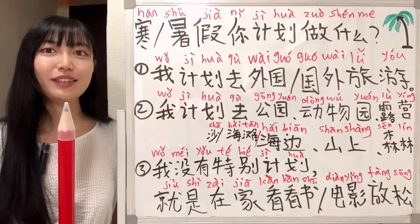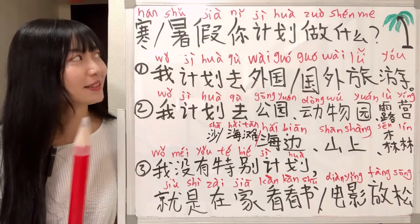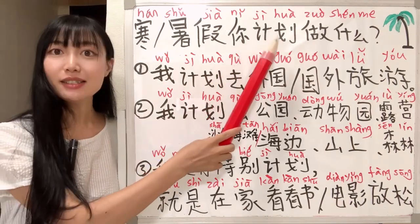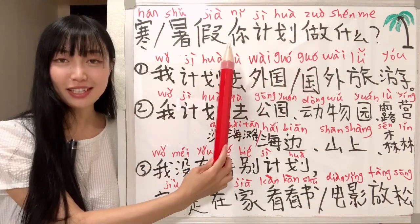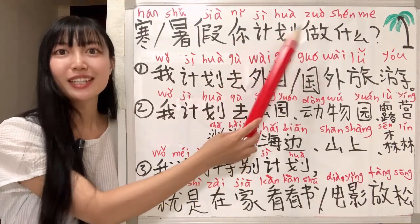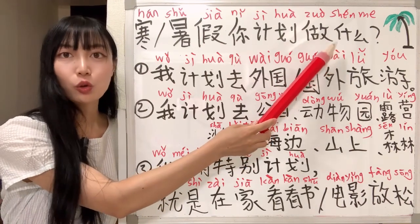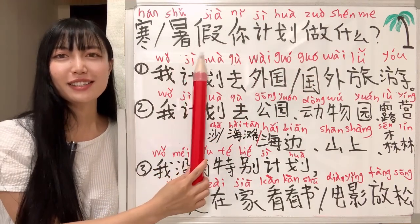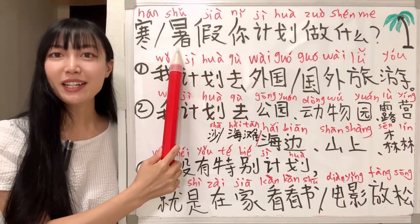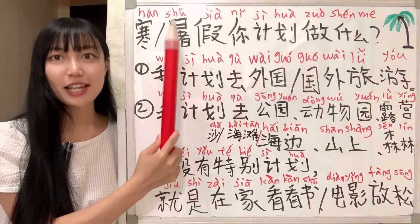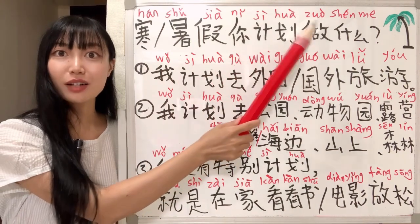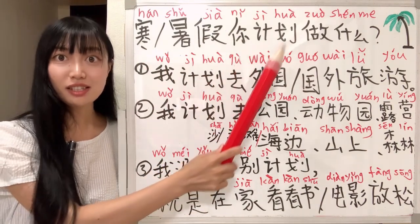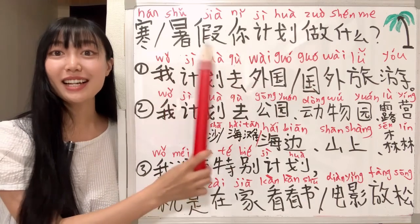And do you have any plans? Or what do you plan to do? You can say 你计划做什么? 你 is 'you', 计划 means 'plan', 做 means 'do', 什么 means 'what'. So: 'What do you plan to do?' You can put 暑假 at the beginning of the sentence: 暑假你计划做什么?